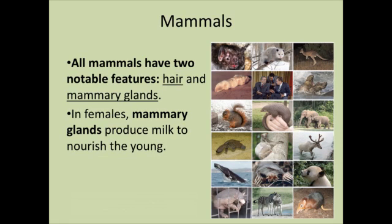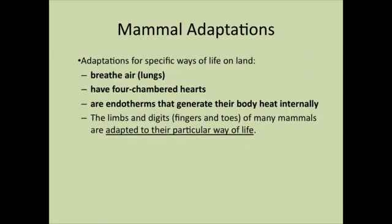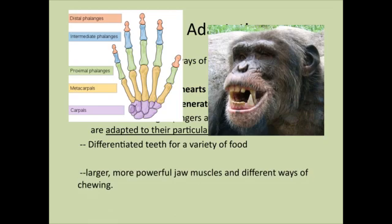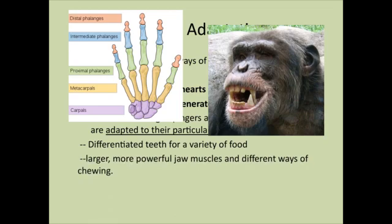Our last vertebrate group is mammals. Mammals are different from any other vertebrate group for two main reasons: they have hair and mammary glands. In females, these mammary glands produce milk to nourish young. Adaptations for life on land include lungs, the four-chambered heart, and endothermy like birds. They have limbs and digits adapted to their particular way of life — here's an example of a human hand. Also really important is differentiated teeth for a variety of food, and stronger, more powerful jaw muscles for chewing different types of food.